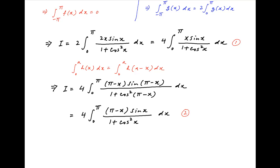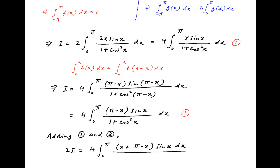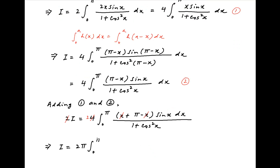Let's call this result 2. Now adding results 1 and 2, on the left hand side we get 2I, and on the right hand side we have 4 times the integral from 0 to pi, taking sin x common in the numerator multiplied by x plus pi minus x, with 1 plus cos squared x in the denominator. The x terms cancel in the brackets, and therefore this simplifies to I equal to 2 pi times the integral from 0 to pi of sin x dx upon 1 plus cos squared x.